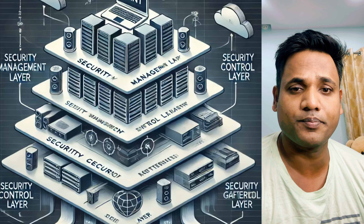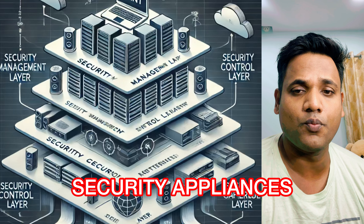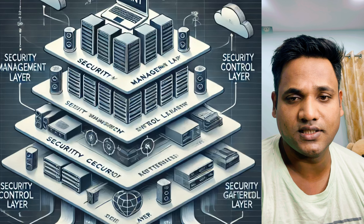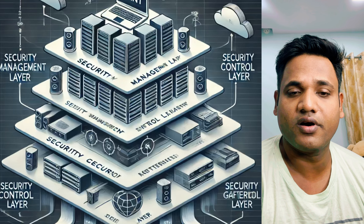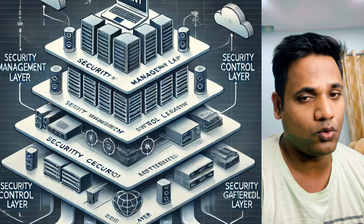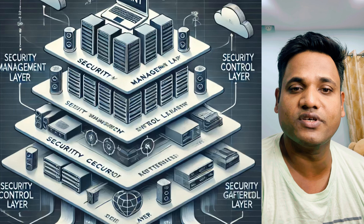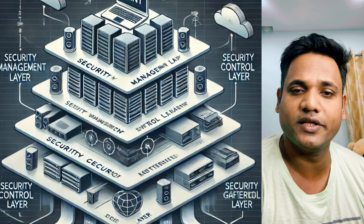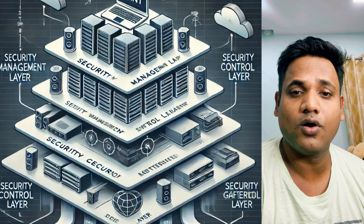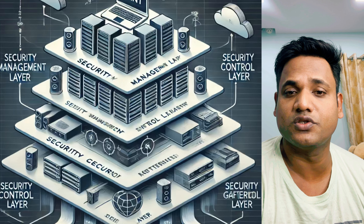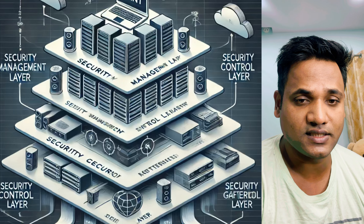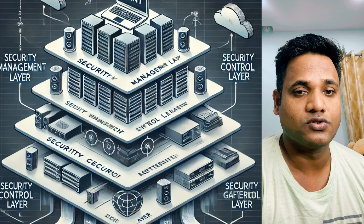The last layer is the Data Layer. This is where actual packet inspection and data processing takes place. The components comprise security appliances or physical firewall appliances that monitor traffic and different aspects of the firewall. The role here is to handle the physical data flow, enforcing the policies set by the Control Layer.